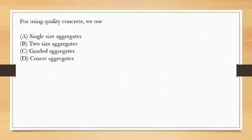Next question: for using quality concrete we use? Options are single size aggregates, two size aggregates, graded aggregates, and coarse aggregates. We always know that the best type of aggregates to produce quality concrete is option C, graded aggregates.